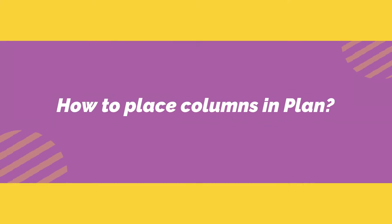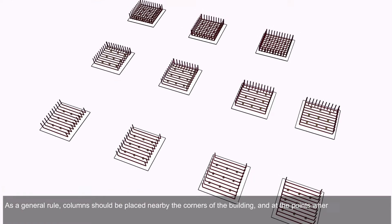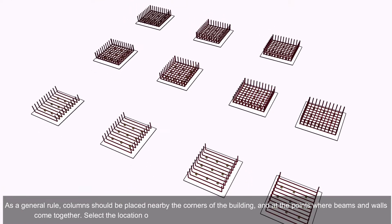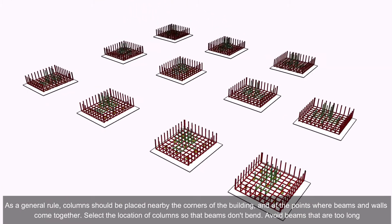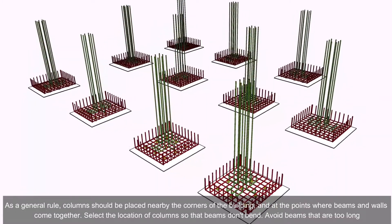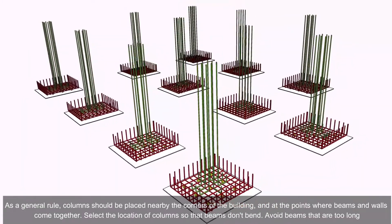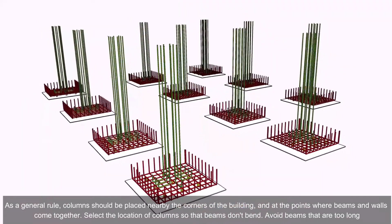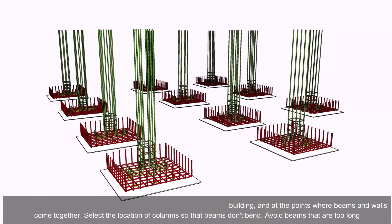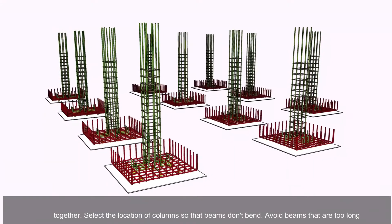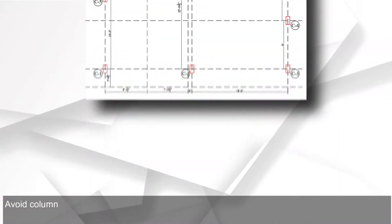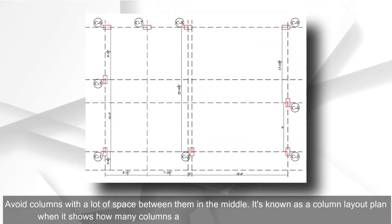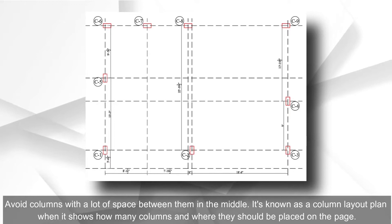How to place columns in plan: as a general rule, columns should be placed near the corners of the building and at the points where beams and walls come together. Select the location of columns so that beams don't bend excessively. Avoid beams that are too long and avoid columns with a lot of space between them in the middle.